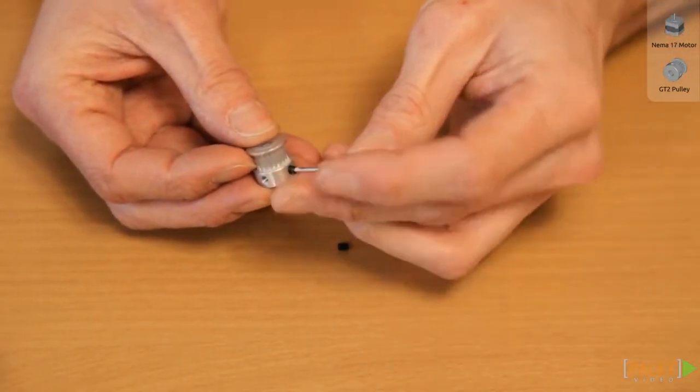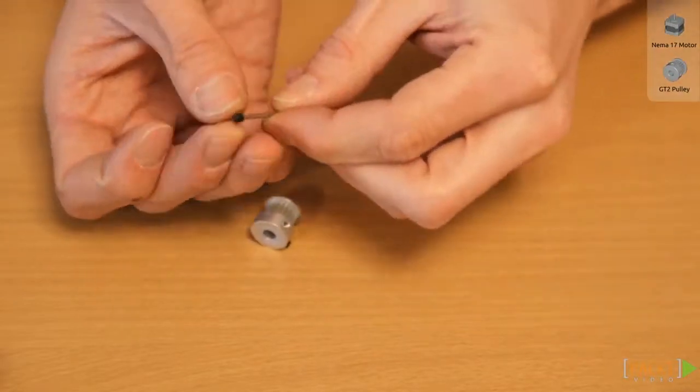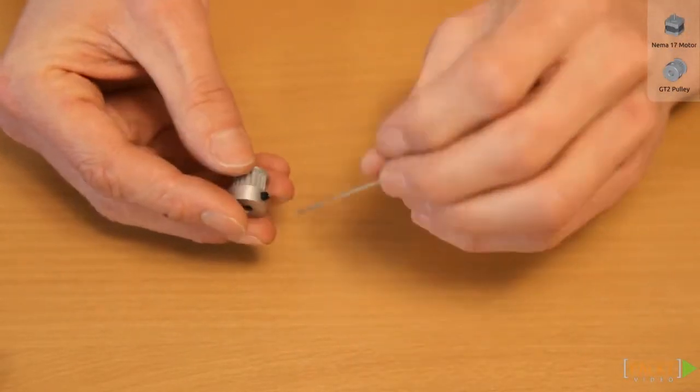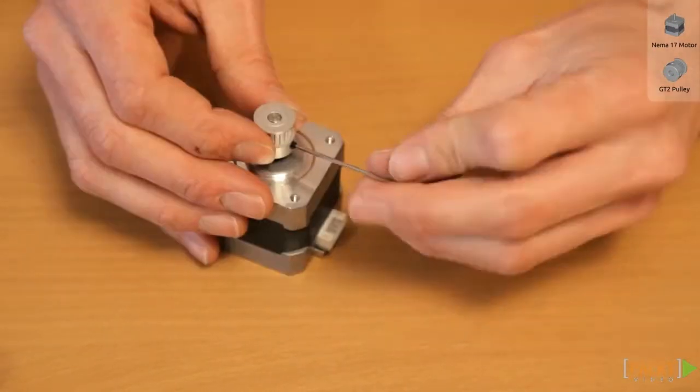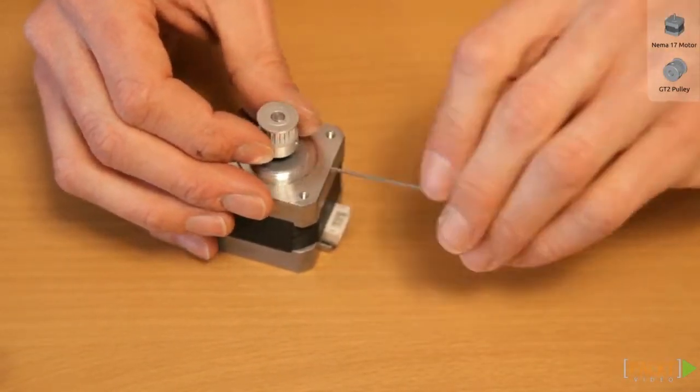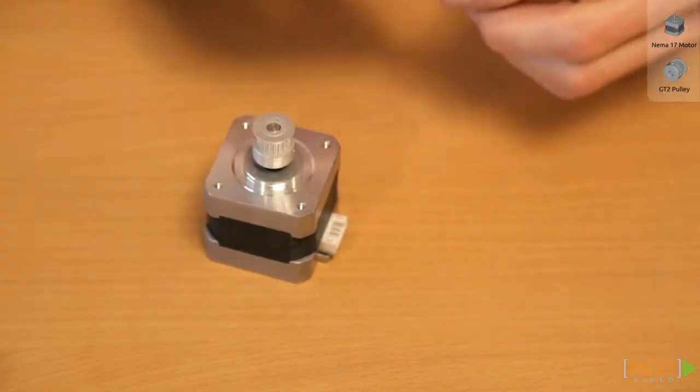You'll find the little screws for the motor pulley in the ziplock bag of your electronics box. Put them into the pulley. Mount the motor pulley to the motor shaft. The screw should be facing the motor and the side of the pulley should be flush with the end of the motor shaft.